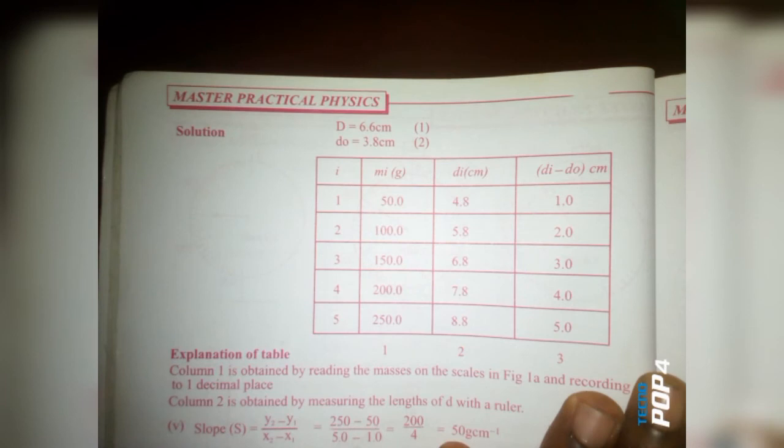Let's move to the table side. We have capital D equal to 6.6 as I said earlier, then d₀ is 3.8 as we measured. Looking at the table, we have mᵢ in grams: 50, 100, 150, 200, 250, just like we read from the scale. Then we have dᵢ in centimeters: 4.8, 5.8, 6.8, up to 8.8. When we evaluate dᵢ minus d₀, our d₀ is 3.8, so by subtracting d₀ from dᵢ we get 1, 2, 3, 4, 5.